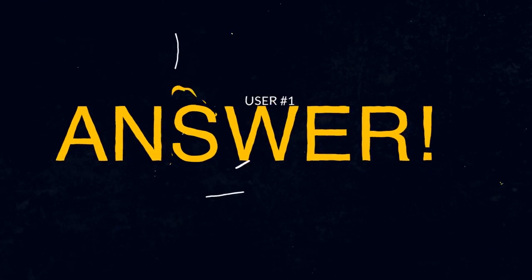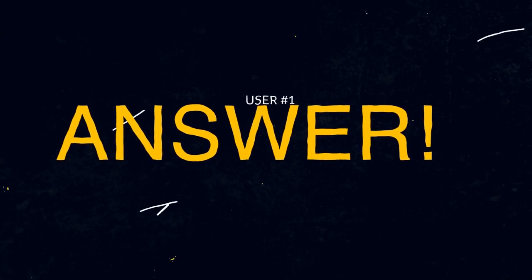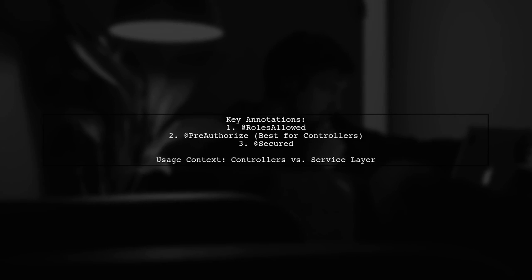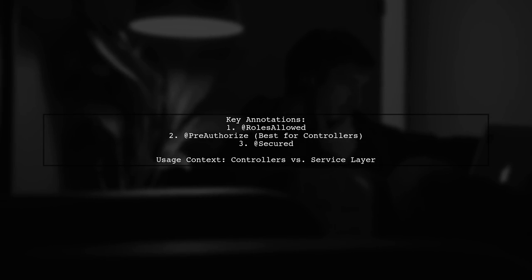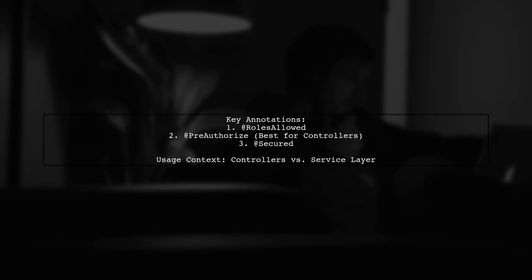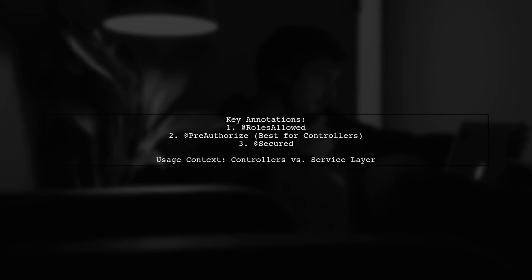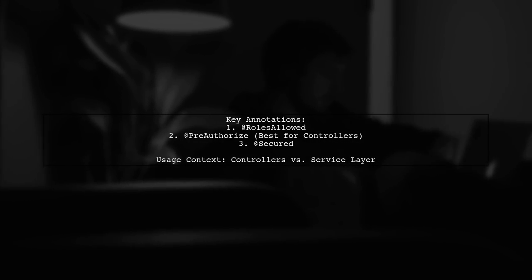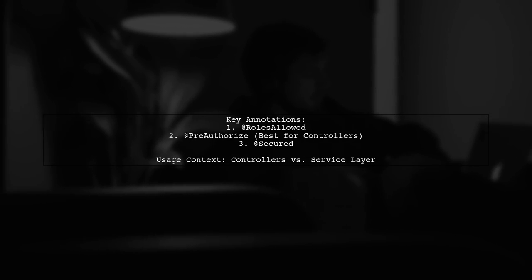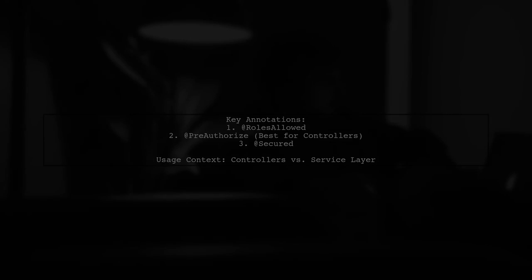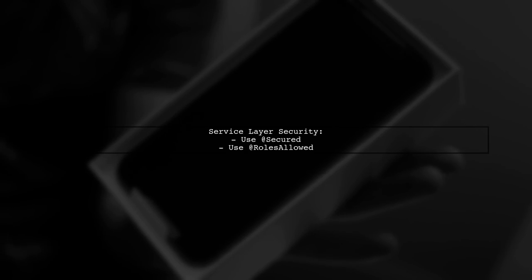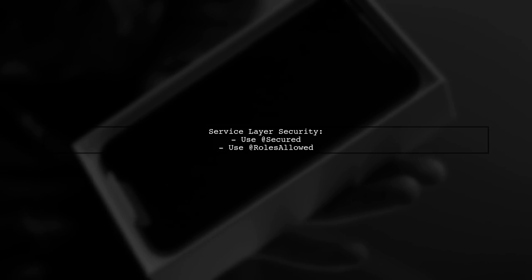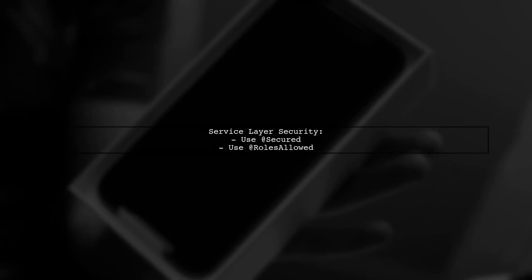Let's now look at a user-suggested answer. All three annotations — @RolesAllowed, @PreAuthorize, and @Secured — serve similar purposes. But @PreAuthorize is the best choice for controllers and their methods. @Secured and @RolesAllowed are more suited for service layer security attributes.